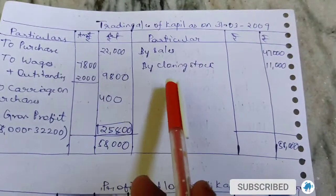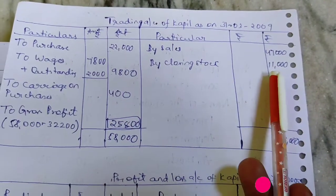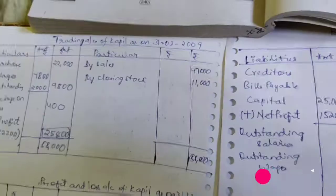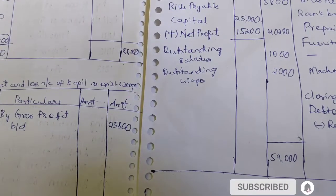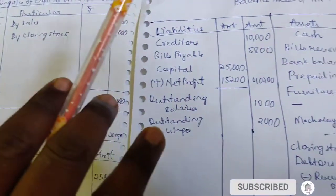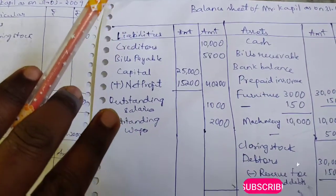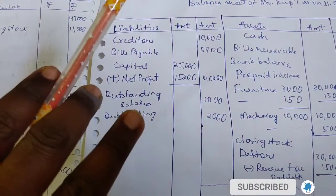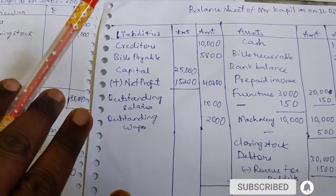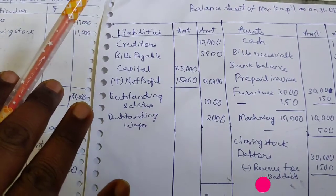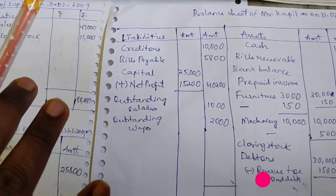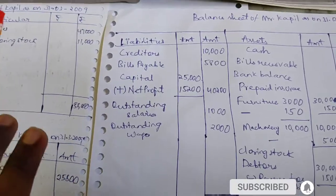Depreciation on machinery is 500; depreciation on furniture is 150. Since a direct amount is given, enter it directly into the P&L account. Closing stock — enter it directly on the credit side of the Trading Account. Now I will show how to complete the Balance Sheet.